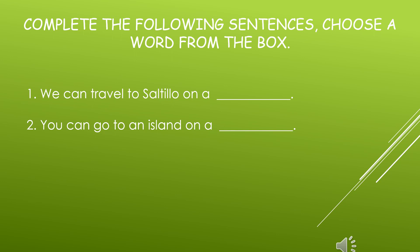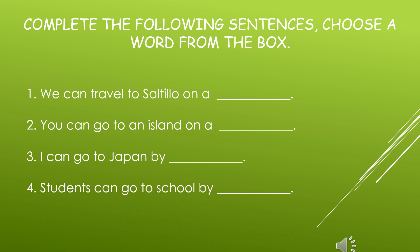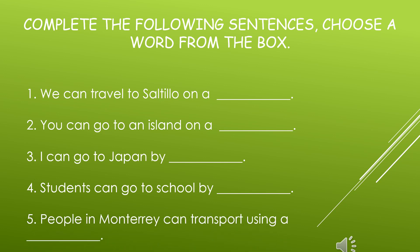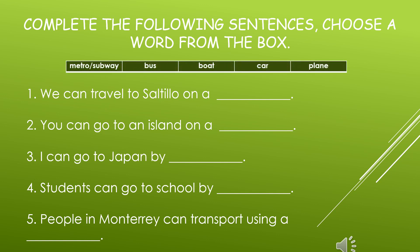Number two: you can go to an island on a... Number three: I can go to Japan by... Number four: students can go to school by... Number five: people in Monterrey can transport using a... The possible answers are: metro or subway, bus, boat, car, and plane.